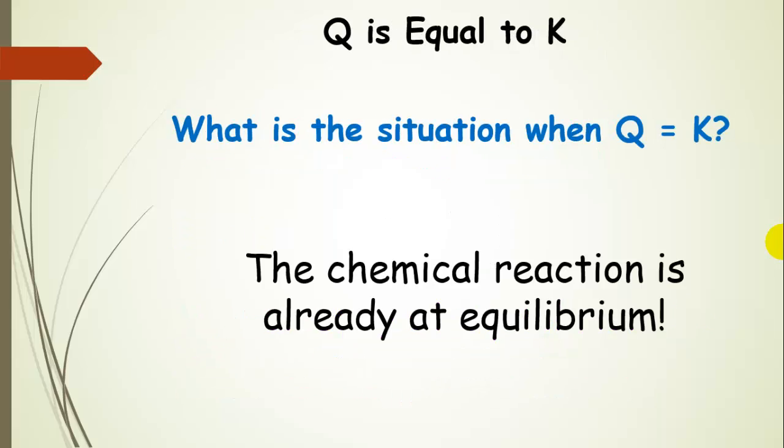Now, what happens if Q is equal to K? This is a happy situation, because basically it just means that the chemical reaction is already at equilibrium. So when Q is equal to K, the system is at equilibrium already.